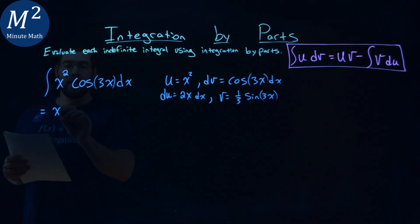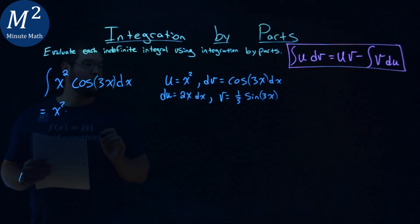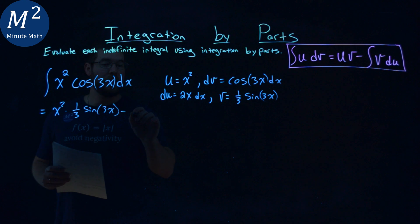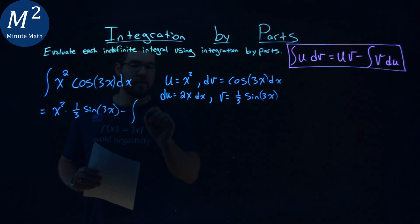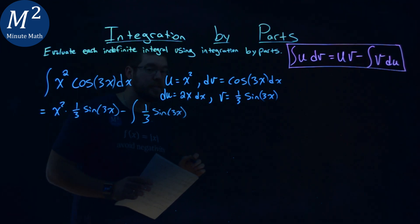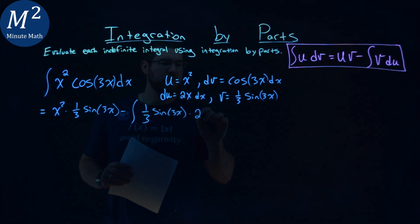u times v: x squared times 1 third sine of 3x, subtracted by the integral of our v value, which is 1 third sine of 3x, times our du value, which is 2x dx.